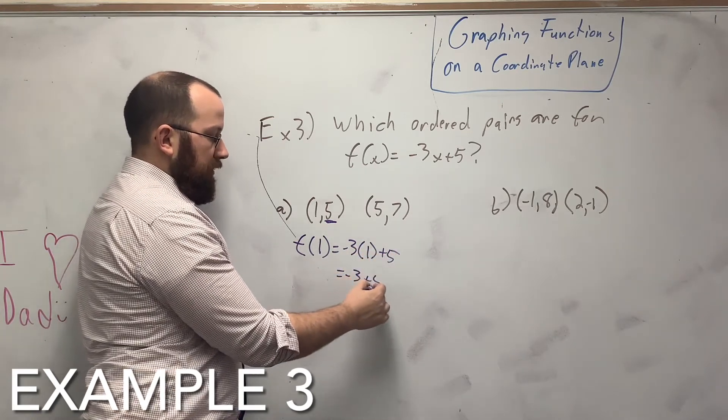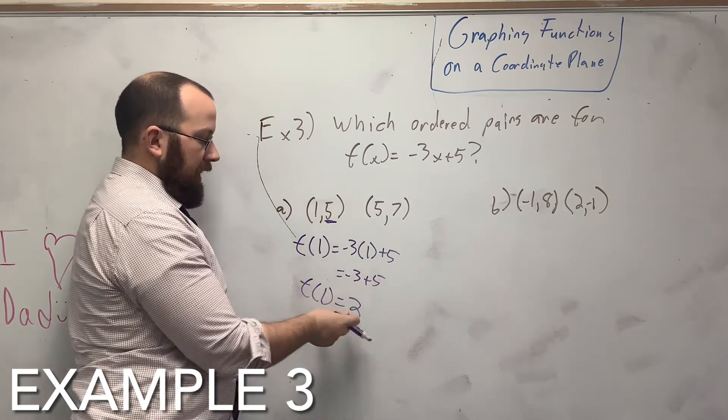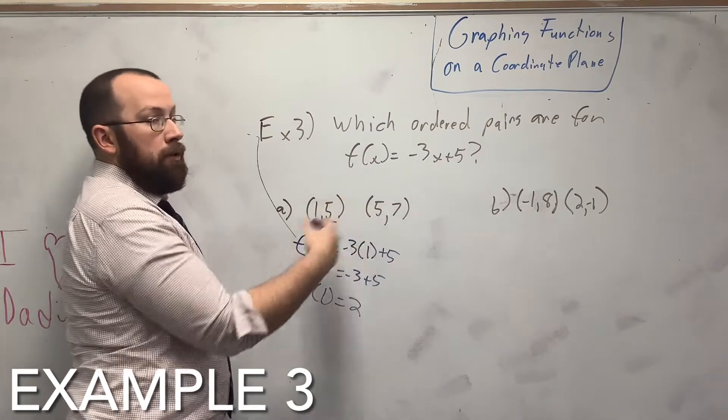Alright, so it gives me negative 3 plus 5, and I get 2. So automatically I know these two ordered pairs aren't for it.